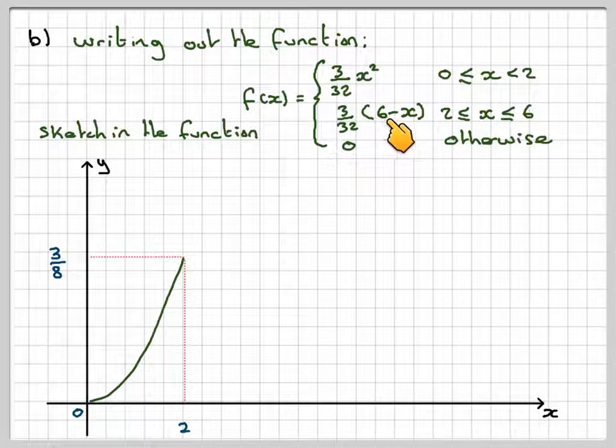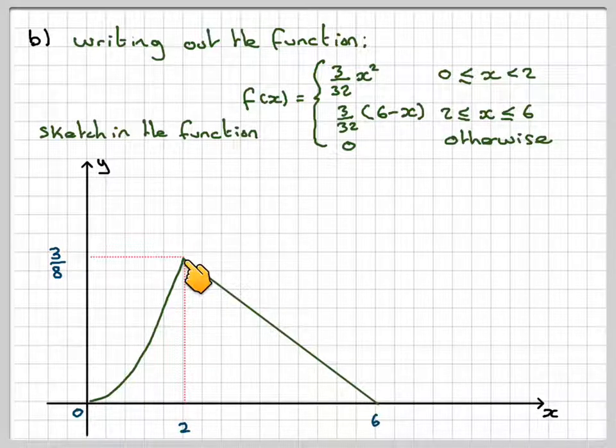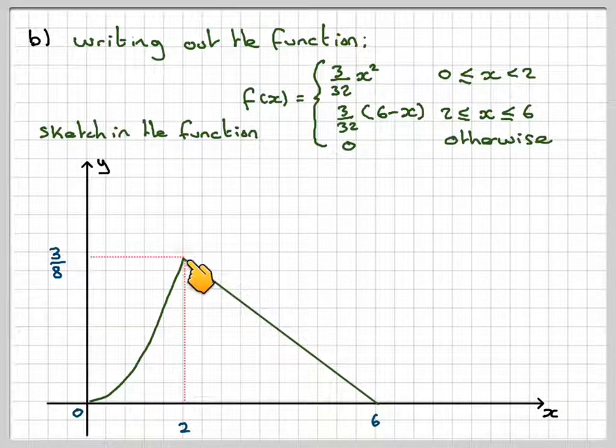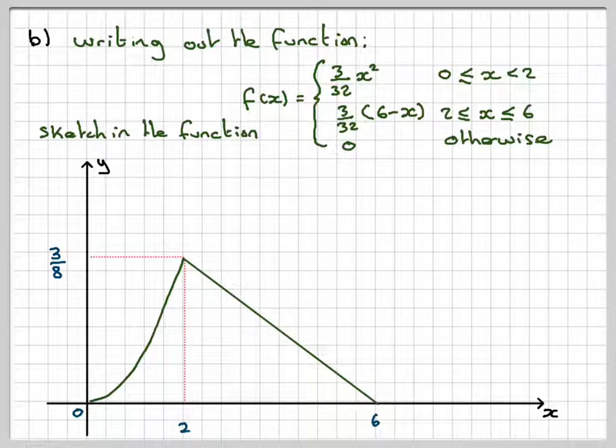This will be 0 when x is 6, so we put on x is 6 and then just draw a straight line because we know this is a linear graph and we know it goes from that point to that point. So that's how you would sketch the function.